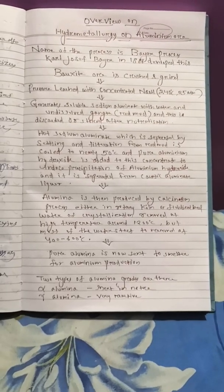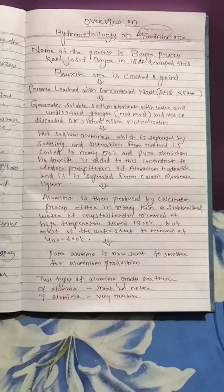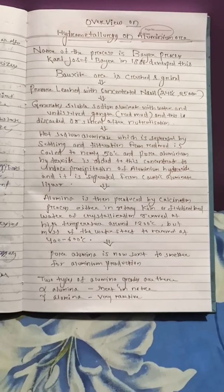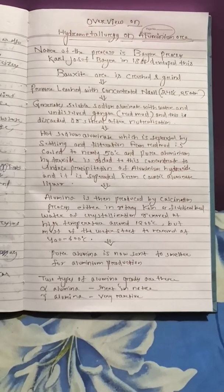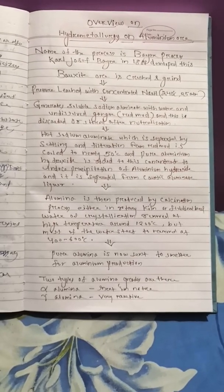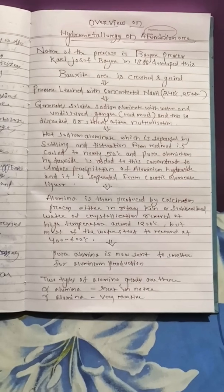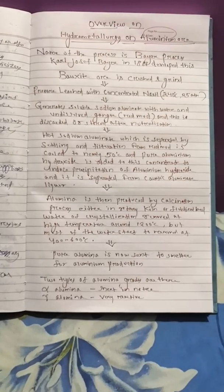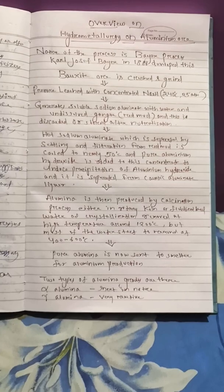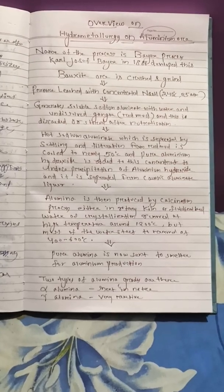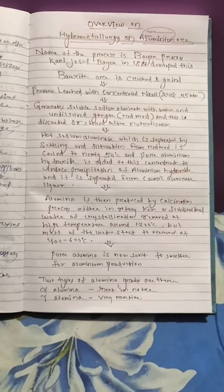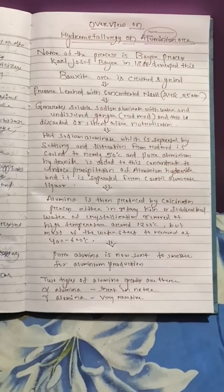The aluminum ore is called bauxite, which is basically Al2O3·XH2O. Bauxite is a combination of two different ores of aluminum: diaspore (Al2O3·1H2O) and gibbsite (Al2O3·3H2O).